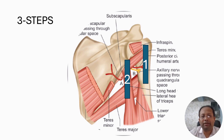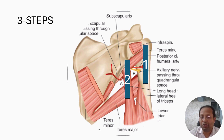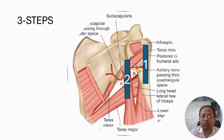We shall locate the quadrangular space in three steps. In Step 1, we put the linear probe in a long axis view of the upper part of the humerus, so a partial picture of the head of humerus, the neck, and also a part of the shaft will be visualized under ultrasound.